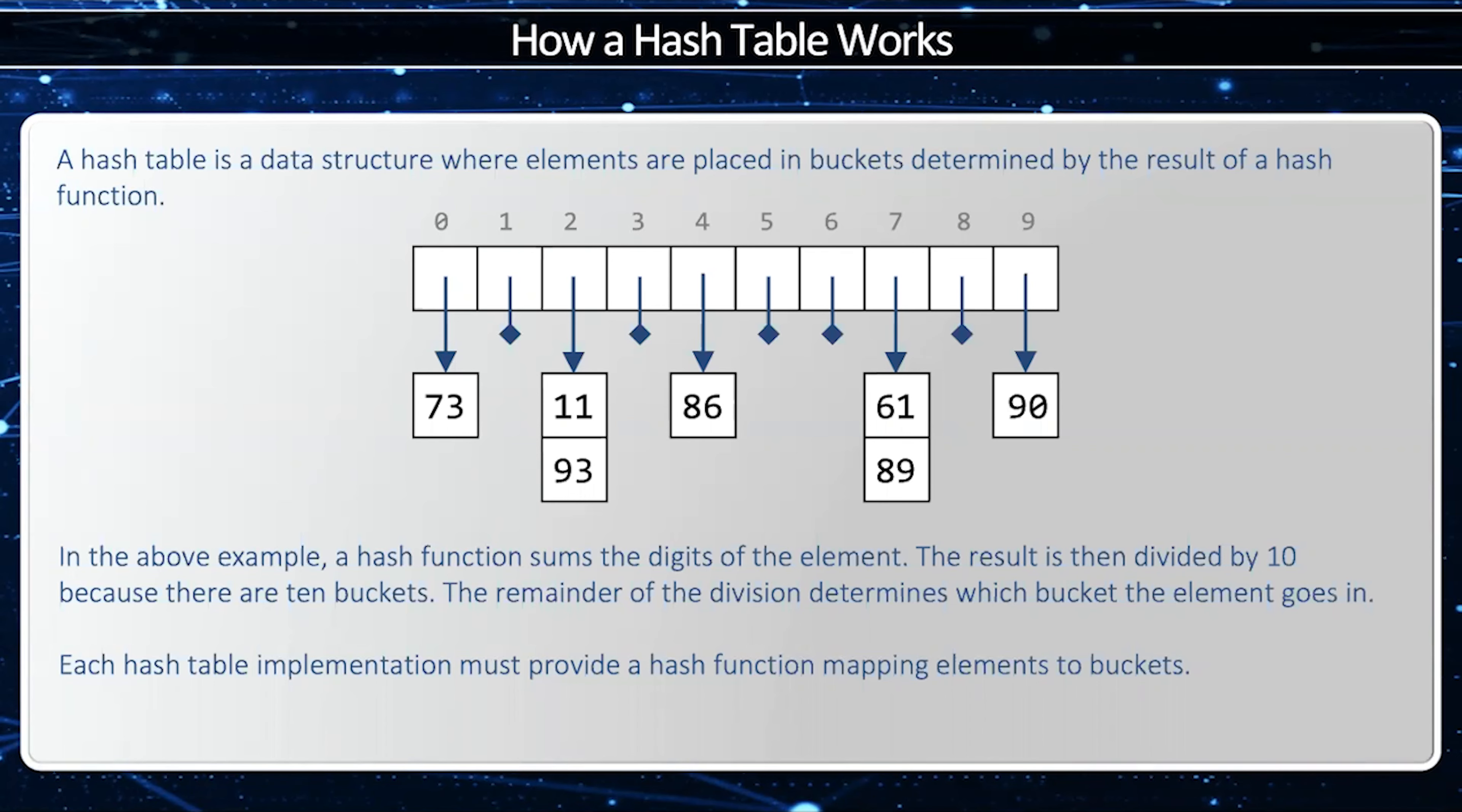The unordered set uses a hash table as the underlying data structure. As a reminder, the hash table is an array of lists. You take an element and put it into the hash table by running through a hash function. This hash function converts the element into an index corresponding to which bucket the element is to belong to.